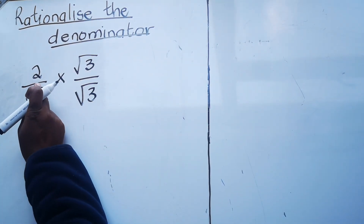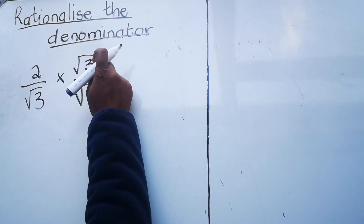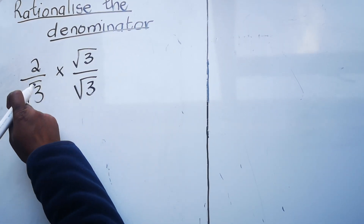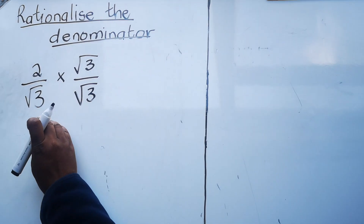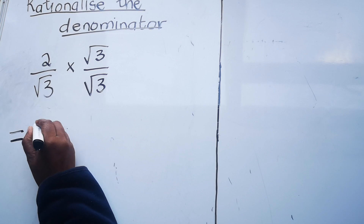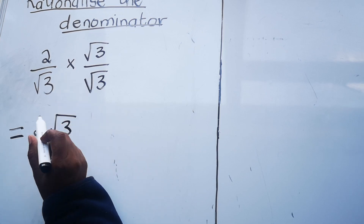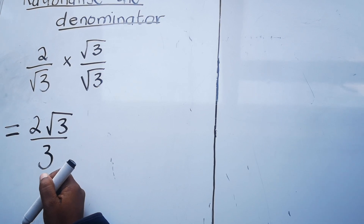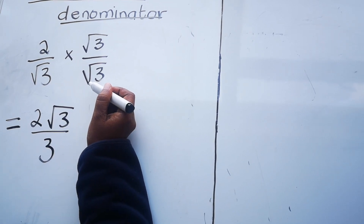What you do is take the denominator that is not rational and create a fraction with that square root over the same square root — this equals one. So I'm not changing the value, just multiplying by a fancy one. When you multiply, you get two times square root three in the numerator, which is two square root three. Then square root three times square root three gives you three, so your denominator is now rational. This method works when you have only one term as a denominator.